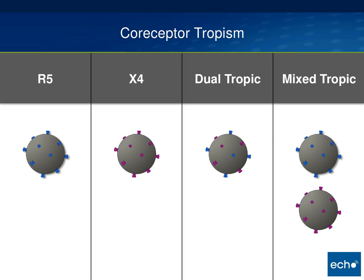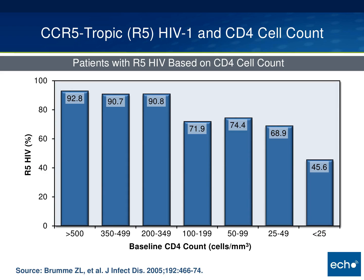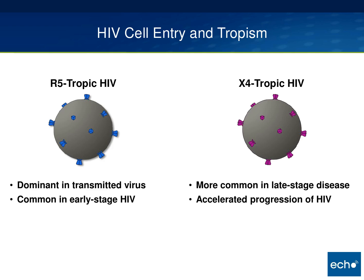Think of mixed tropic as a mixture of right-handed and left-handed viruses. To summarize, the major types are R5 virus, X4 virus, dual tropic virus, or mixed tropic virus. When someone is first infected with HIV, they're almost always infected with R5 virus. Above a CD4 count of 500, most people have pure R5 tropic virus. As you move to more advanced HIV with CD4 count under 50, this drops off significantly — you have a much greater chance of individuals having X4, dual, or mixed virus.